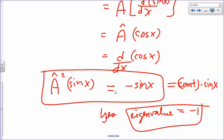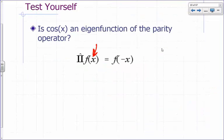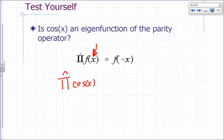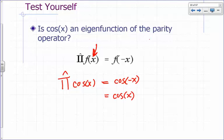Is cos(x) an eigenfunction of the parity operator? Remember, every time you see an x, replace it with negative x. The parity operator operating on cos(x) gives you cosine of negative x. But cosine of negative x is just cosine x — it's an even function. So the answer is yes. What's the eigenvalue? The eigenvalue is plus one.